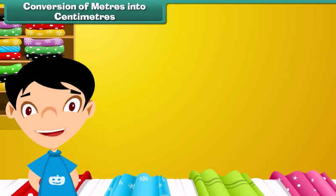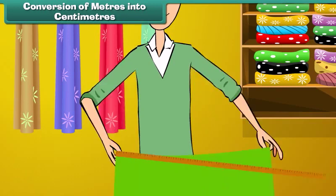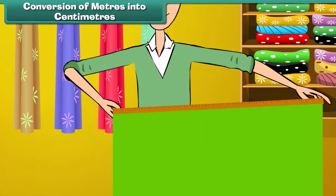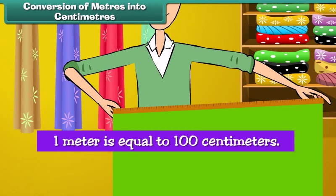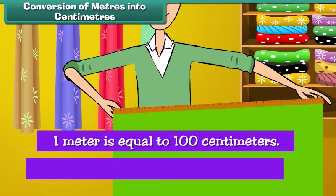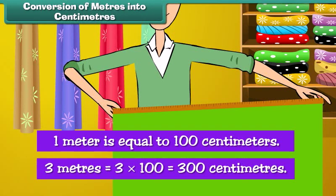Conversion of meters into centimeters: It is time to understand the relationship between meters and centimeters. One meter is equal to 100 centimeters. Therefore, 3 meters is equal to 3 into 100, which equals 300 centimeters.